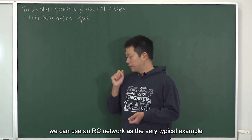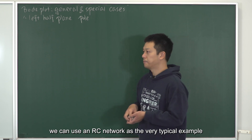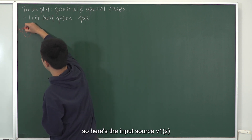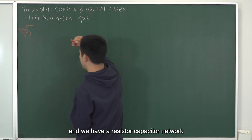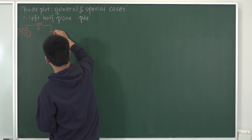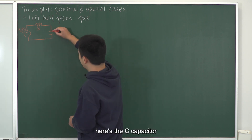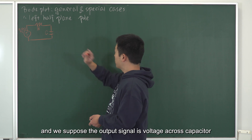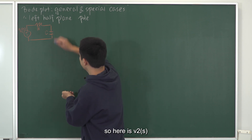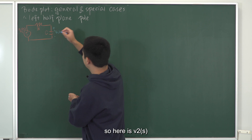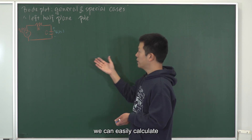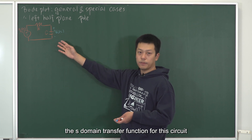For example, we can use an RC network as the typical example. Suppose we have a circuit with an input source V1S, a resistor R, and a capacitor C. We suppose the output signal is the voltage across the capacitor, V2. For this general case in circuit theory, we can easily calculate the S-domain transfer function for this circuit.